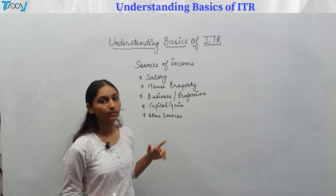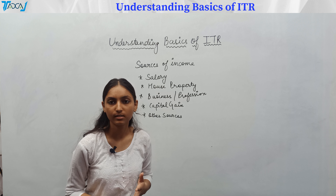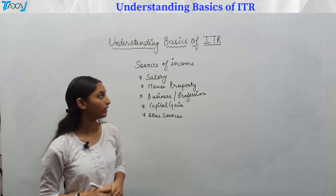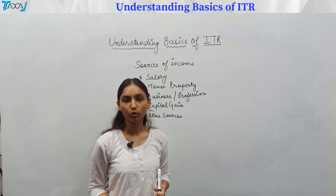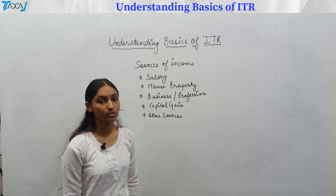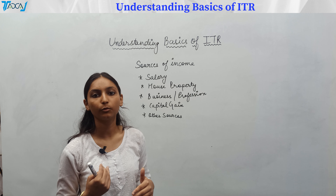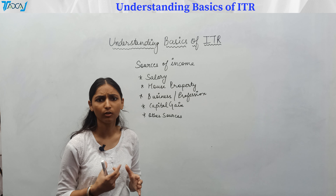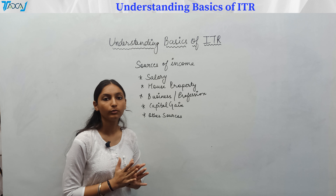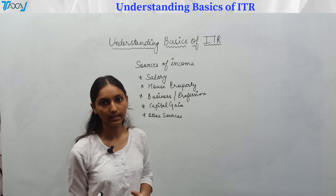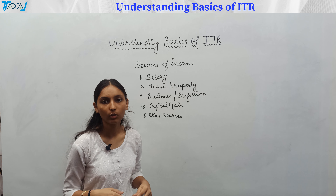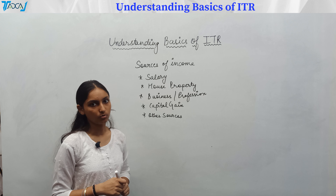Salary includes basic salary, allowances, and perquisites. House property income applies whether your property is rented or self-occupied. Business and profession income includes gross receipts, gross profit, or gross loss. Capital gain applies when you sell a capital asset — any gain or loss comes under capital gain. Other sources include savings account interest and all remaining income.